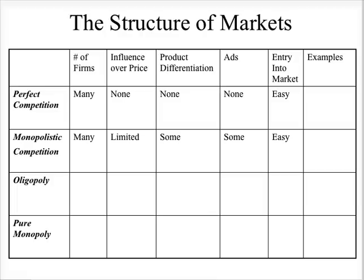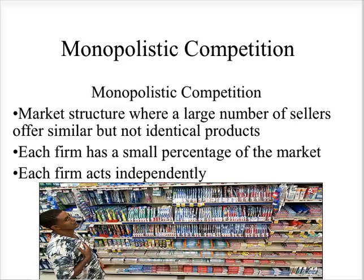The next category is monopolistic competition. There are many firms. They start to have a limited influence over the price. There's some product differentiation, some advertising used, and it's still fairly easy to enter the market. This is a market structure where there are a large number of sellers, and they offer similar but not identical products.